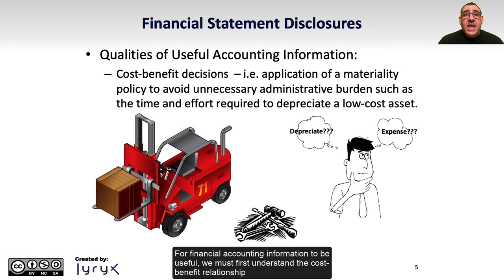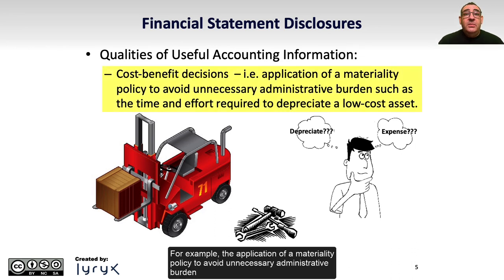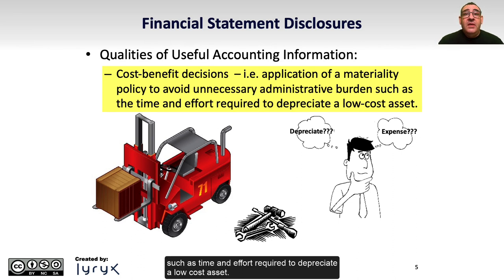For financial accounting information to be useful, we must first understand the cost-benefit relationship, where the benefit of disclosing information must exceed the cost of gathering, processing, and disclosing. For example, the application of a materiality policy to avoid unnecessary administrative burden, such as time and effort, required to depreciate a low-cost asset.